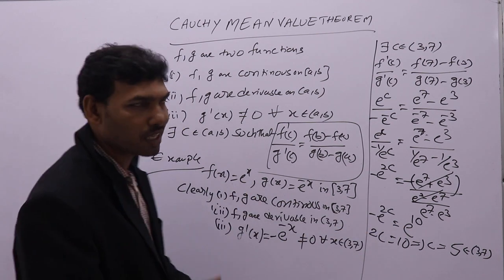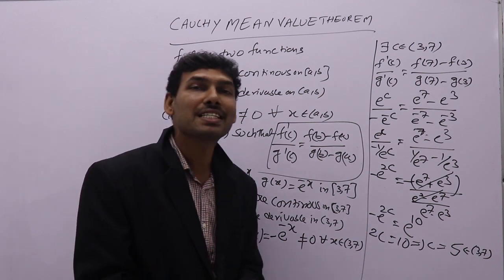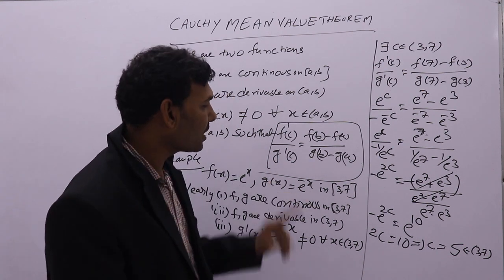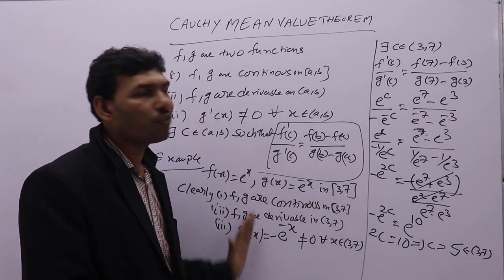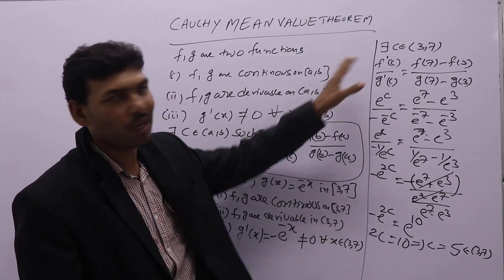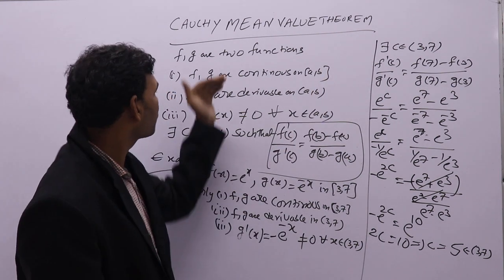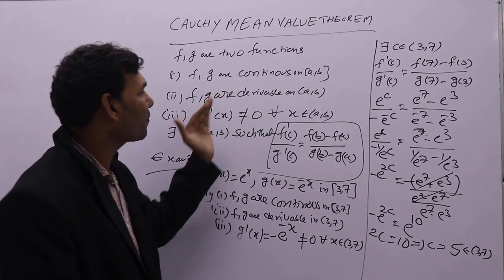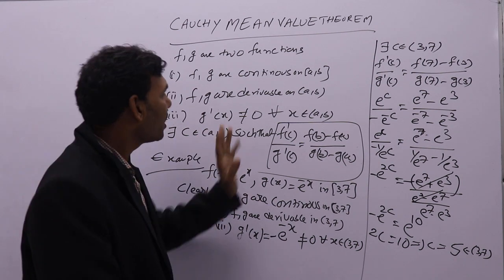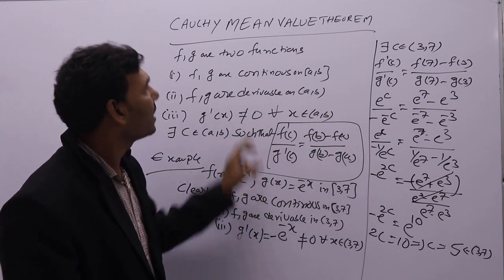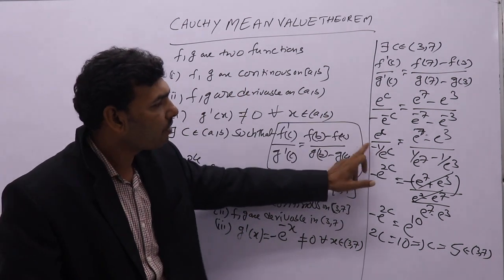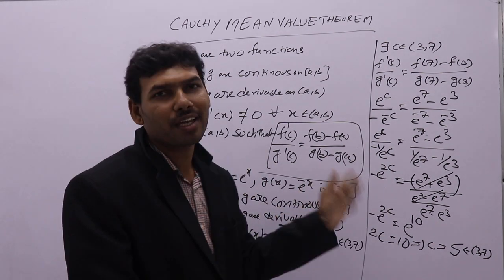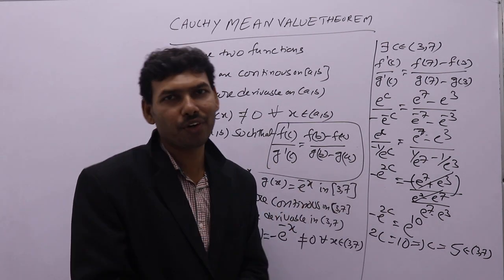Sometimes you may get questions like: find c of Cauchy mean value theorem. To find c, you need to follow these steps: first, check the three conditions. If the functions satisfy these three conditions, apply Cauchy mean value theorem, find the c value, and verify that it lies between a and b.